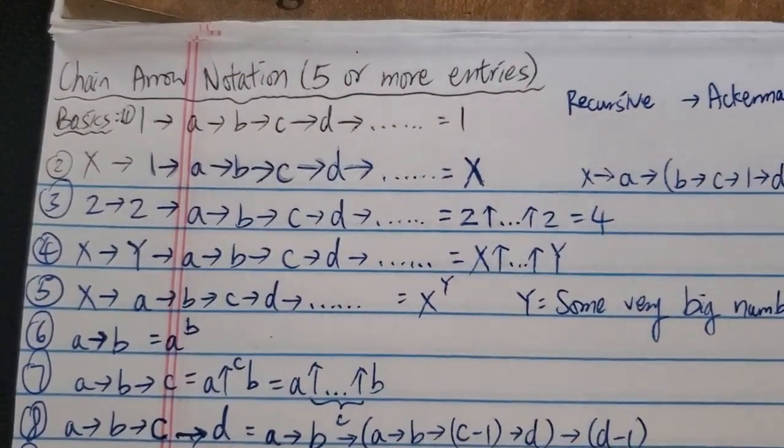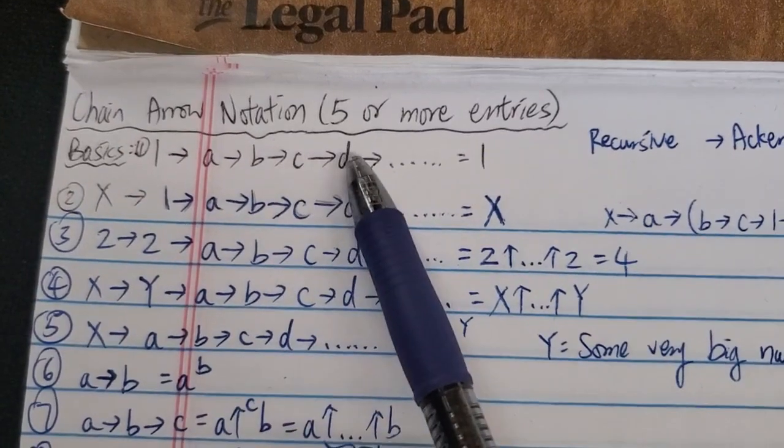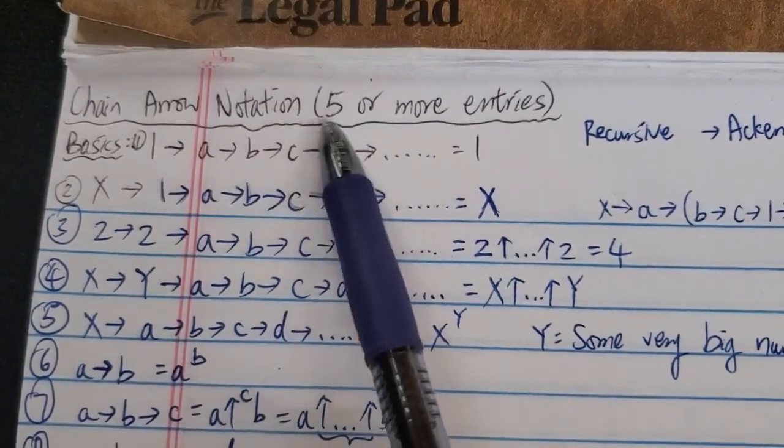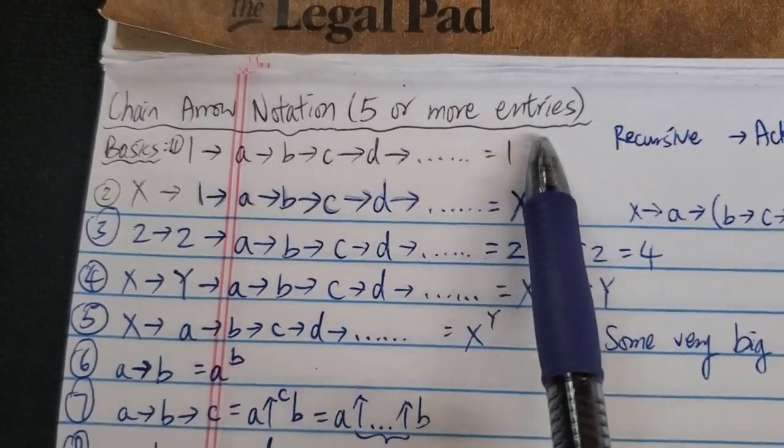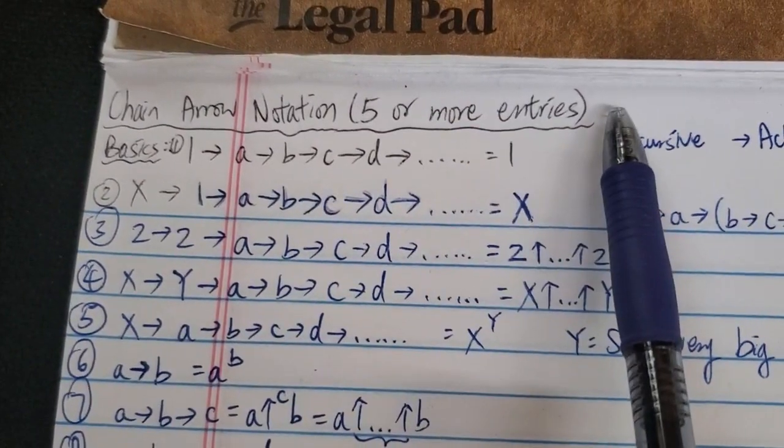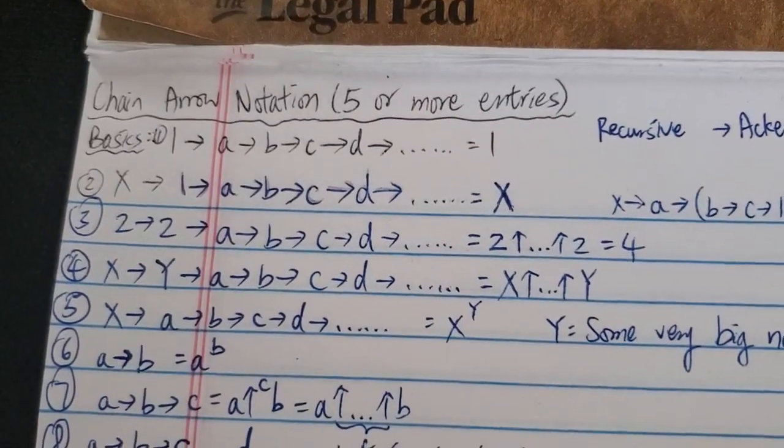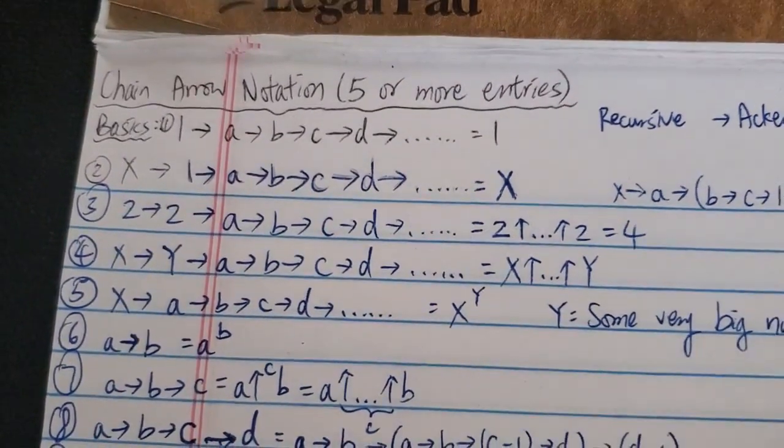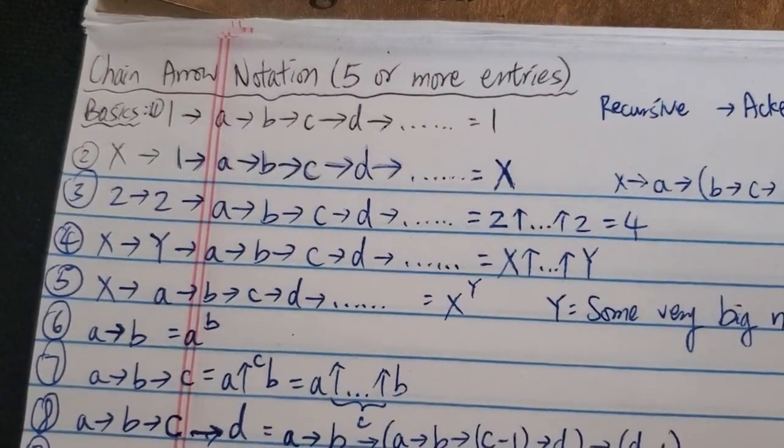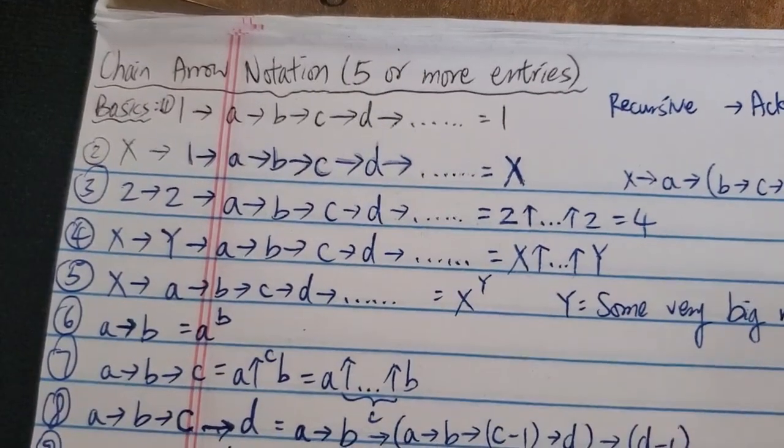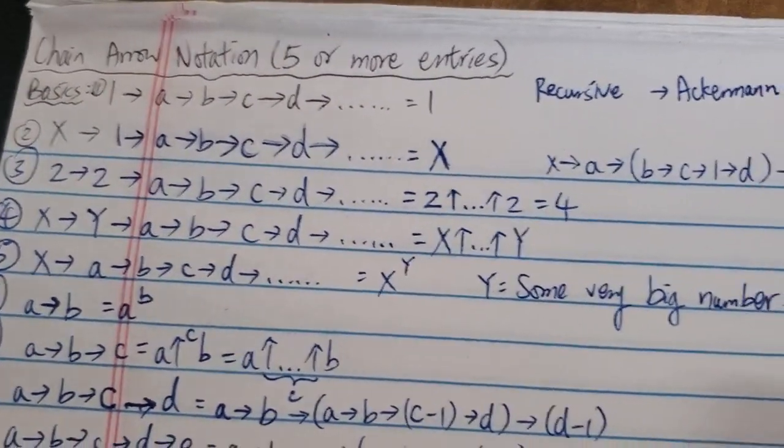Hi everyone, so today I'm going to talk about more on chain arrow notation, especially for five or more entries. I've seen a lot of people asking me about how this works, so I'm going to make a video on this. I already have a previous video from some years ago that you can watch first, but that one is very basic. It talks about everything with four entries or less. But first, let's talk about some of the basics again.